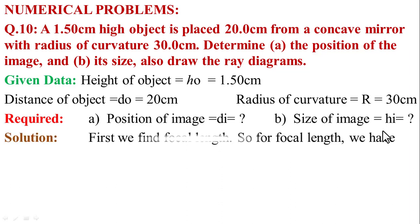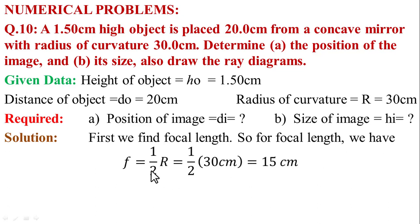For the solution, first we find the focal length. Using the formula, focal length F equals R divided by 2, which is half of the radius of curvature. So F = 30 cm divided by 2 = 15 cm. The focal length is 15 cm.